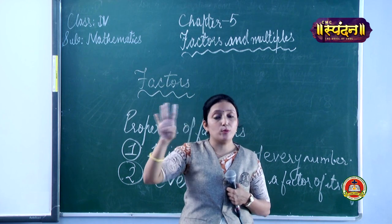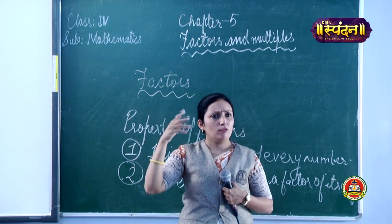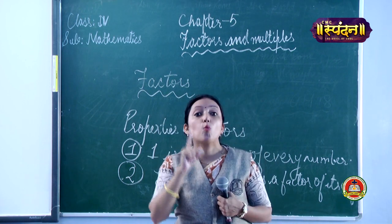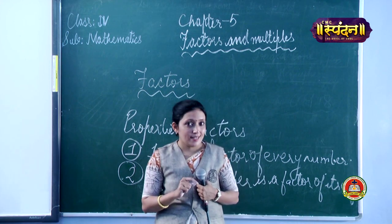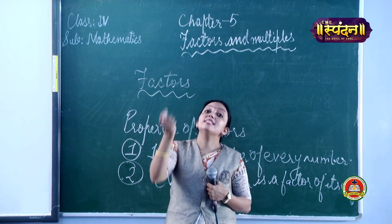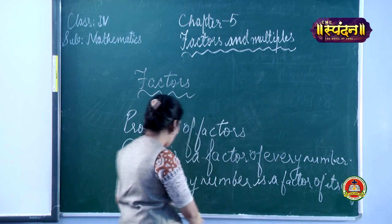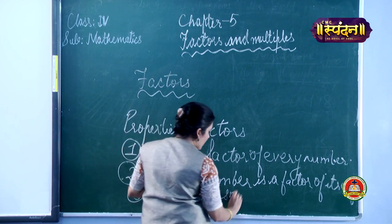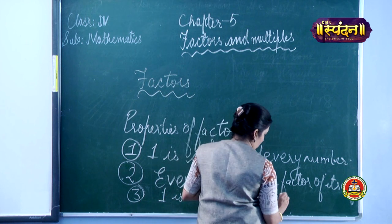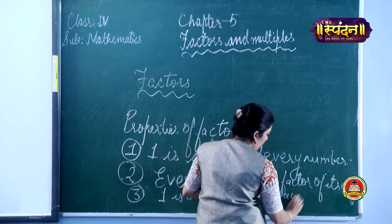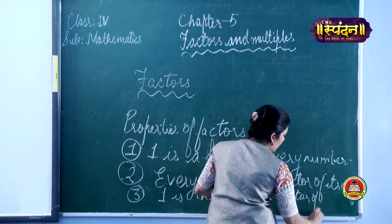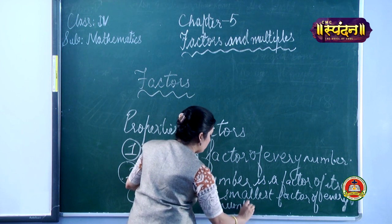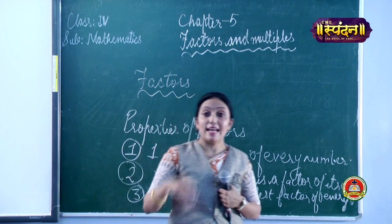Think of any number — 5, 6, 7 — the first factor we always write is 1. So the third property is: 1 is the smallest factor of every number.